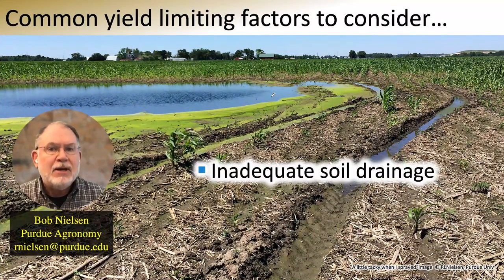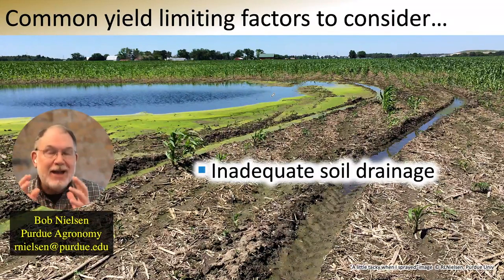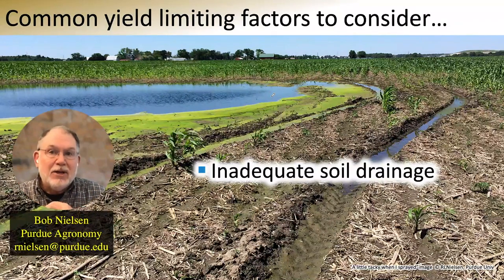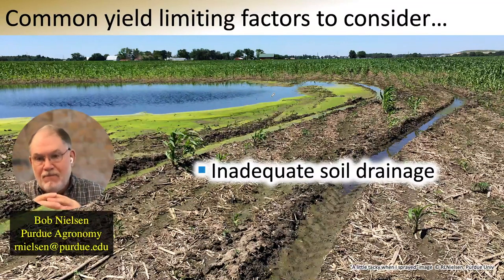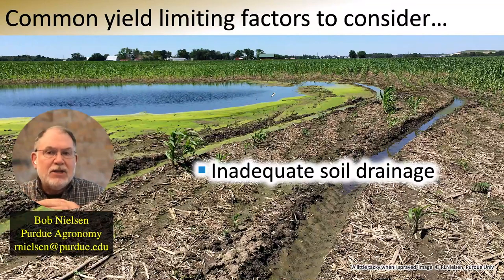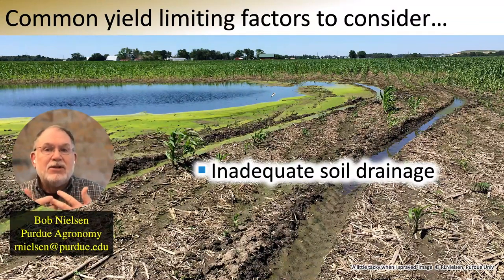Now I want to talk about some common yield-limiting factors to consider. One of the most common yield-limiting factors in Indiana continues to be poorly drained soils. Yes, there's been a lot of tile work done over the decades, and there is a certain amount of surface drainage done. But nevertheless, there are still many, many acres in this state that continue to be poorly drained, and this creates all sorts of problems.